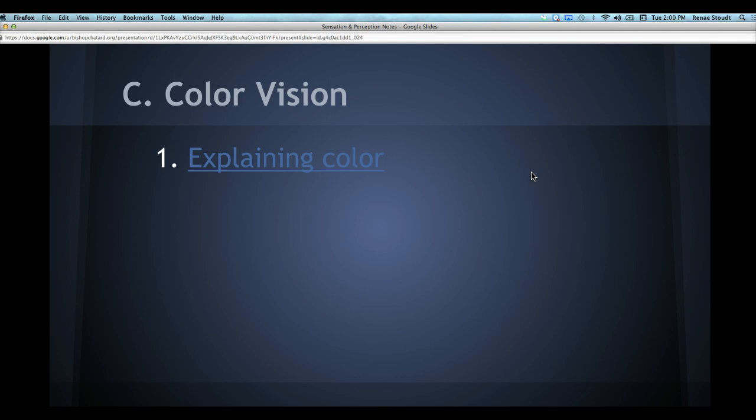Now, we already said do rods or cones see color. Cones. Cones see color. Rods see black, white, and gray. The cones see color. So, how can you explain, how do we explain the variances in color that we see? And why is it that some people don't see color? And when we say somebody's colorblind, what does that mean?